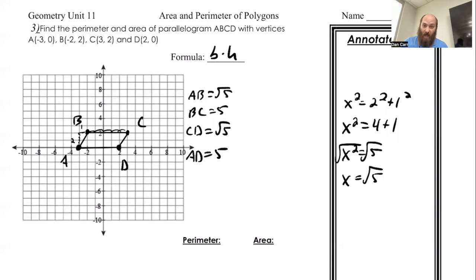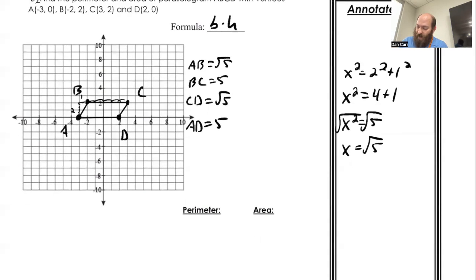From there, perimeter is, again, adding everything up. So I've got 5 plus 5 plus the square root of 5 plus the square root of 5. So we got, that'll come out to 14.472 units.